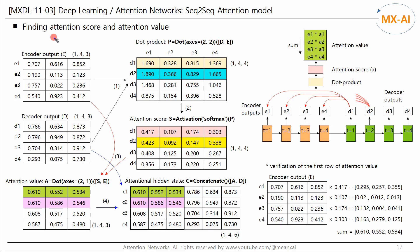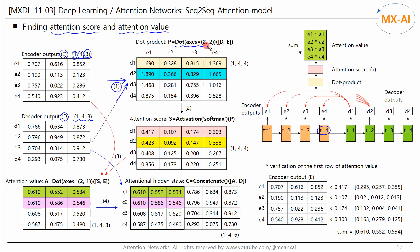Let's look at how to get the attention score and attention value through a simple example. The outputs of each time step of the encoder have a tensor shape of 1, 4, 3 — the first dimension is batch size, the second is the number of encoder time steps, and the third is the number of neurons in the encoder's recurrent layer. The decoder output tensor has the same shape. First, we compute the dot product of the encoder output tensor and the decoder output tensor. We can achieve this using Keras' dot layer.